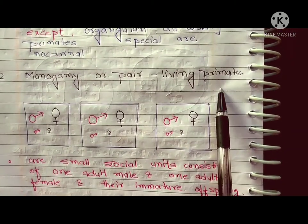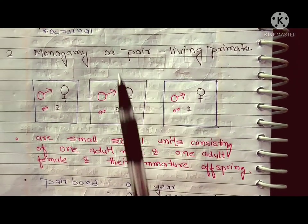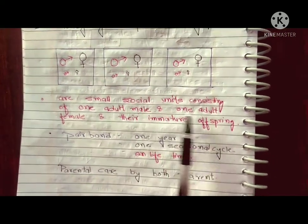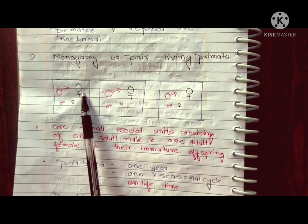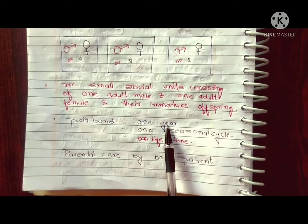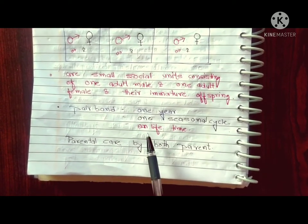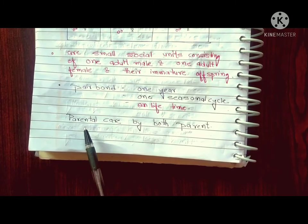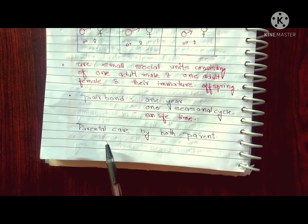Next, let's look at monogamy and paired living in primates. This is a small social unit which consists of one adult male and one adult female and their immature offspring. These pairs stay together for at least one year or one seasonal breeding cycle. Both male and female parents are involved in parental care.